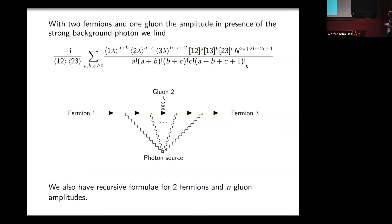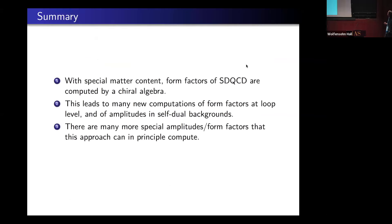Then I consider scattering, say, two fermions and some arbitrary number of gluons in this background. And we get these beautiful hypergeometric series. I thought this was kind of fun. There's many similar computations you can do which give these exact results.